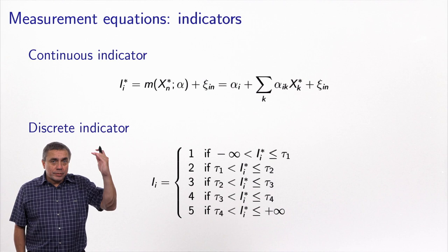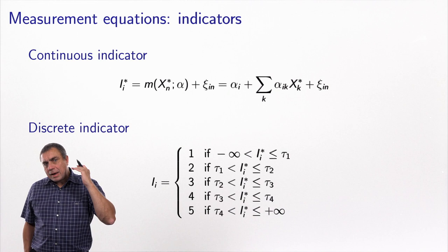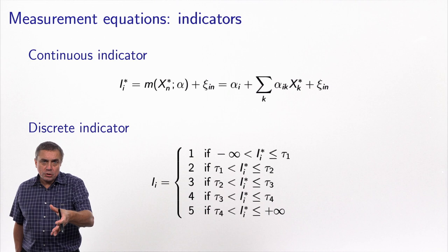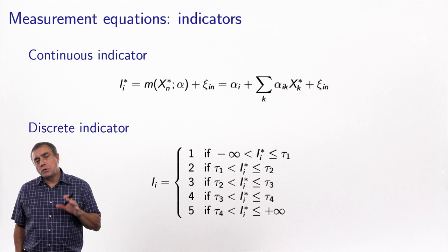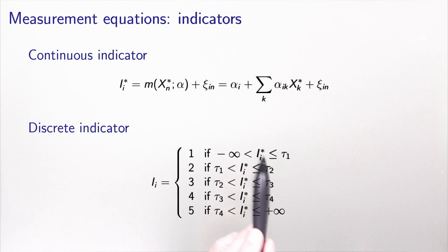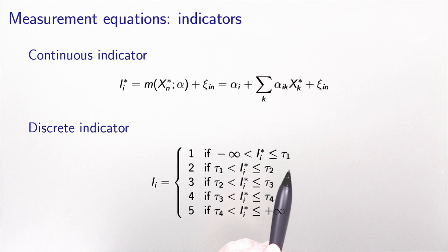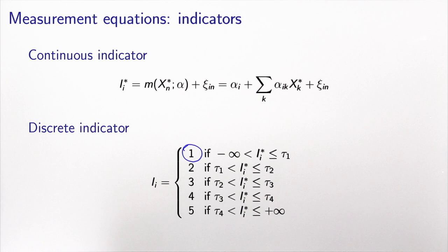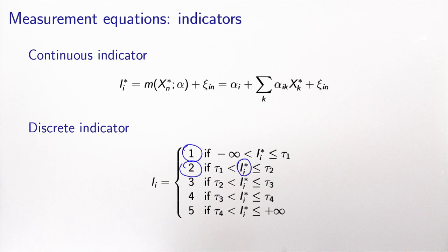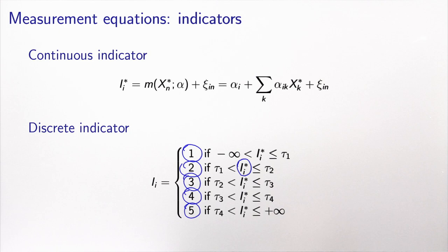Of course, this is not what people report — they report on a scale from 1 to 5. So in the second stage, I translate this continuous indicator into a discrete indicator. The idea is: if I-star is below threshold tau_1, people respond 1 (strongly disagree); between tau_1 and tau_2, they disagree; between tau_2 and tau_3, they are neutral; between tau_3 and tau_4, they agree; and above tau_4, they strongly agree.